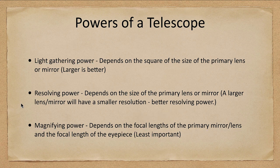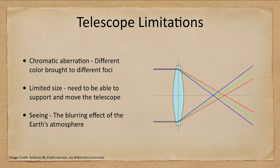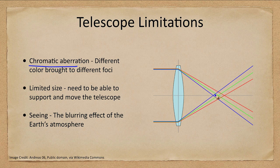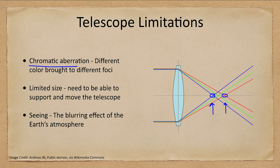Now let's look at some of the limitations of a telescope. One limitation for lenses is chromatic aberration. This is very common especially in inexpensive refracting telescopes, because the lens acts like a prism and splits the light into its component colors. The blue light comes to a focus at a different point than the red light. If you focus the blue light then your red is out of focus, and vice versa. So you may see with an inexpensive refracting telescope a nice star image with a blue or red halo around it. This can be adjusted by adding multiple lenses, but it's never completely eliminated.